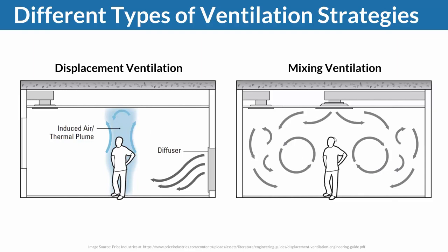On the right, we see mixing ventilation, where conditioned air is brought in from the top at higher velocities. The goal is to ensure the conditioned air immediately mixes everywhere in the room and then leaves. There are lots of pros and cons — there is no one right ventilation strategy for all situations. It depends on the room and the requirements.